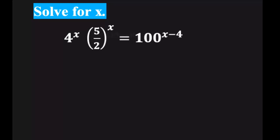4 times 5 is 20. 20 divided by 2 is 10. So we have 10 to the power of x.